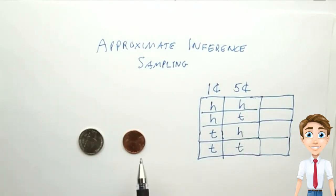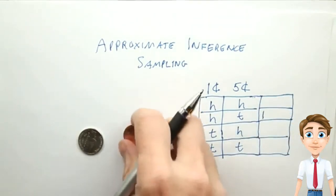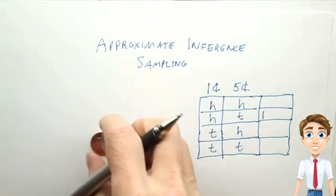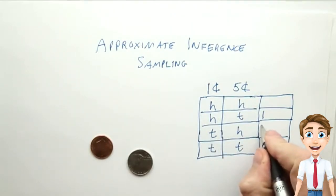Here we have our first sample. We flip the coins, and the one cent piece came up heads and the five cent piece came up tails. So we would mark down one count, then we toss them again. This time the five cents is heads and the one cent is tails, so we put down a count there.